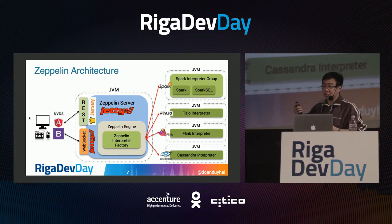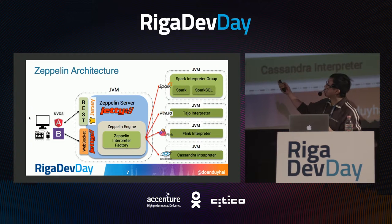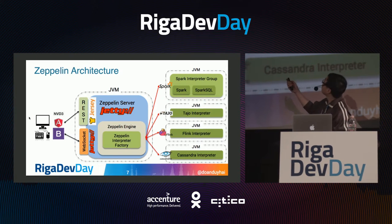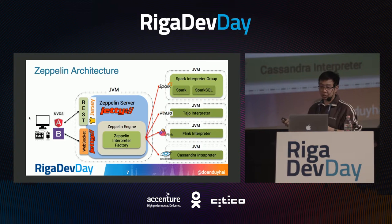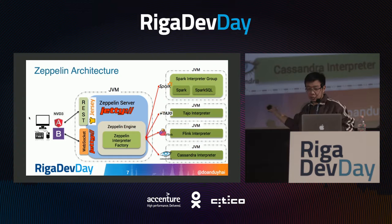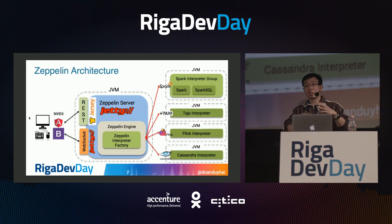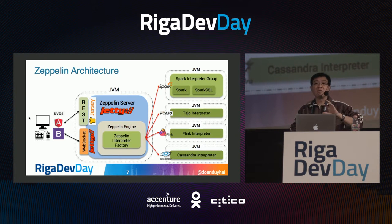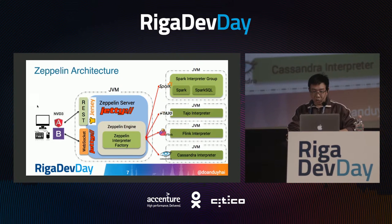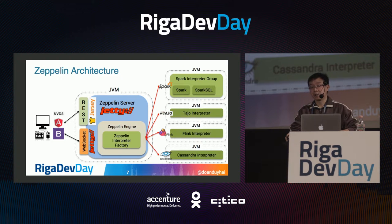The real job is done by interpreters. We have many interpreters: the Spark interpreter, Apache Flink interpreter, Apache Cassandra interpreter. Each of those interpreters runs on a different JVM and communicates with Zeppelin through a TRIP interface — a binary RPC protocol.